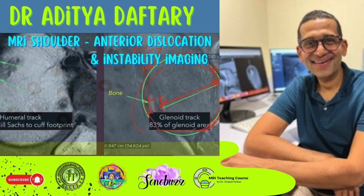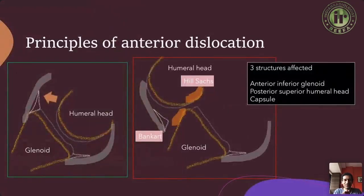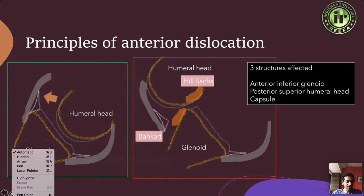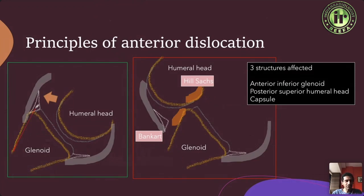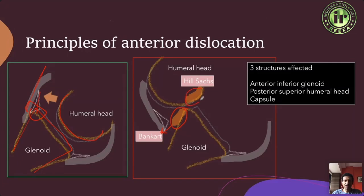Let's jump right into this. Here is the basic principle of anterior dislocation. There's a glenoid and a humeral head, and once this humeral head walks anteriorly it takes off a bunch of the anterior capsule, labrum, and sometimes bone. This is what happens in anterior dislocation. Along with that, the posterior superior humeral head starts to impact posteriorly, giving you your Hill-Sachs lesion. Anteriorly you have your Bankart — so remember: H is for Hill-Sachs and H is for humerus, so the Hill-Sachs is on the humerus.